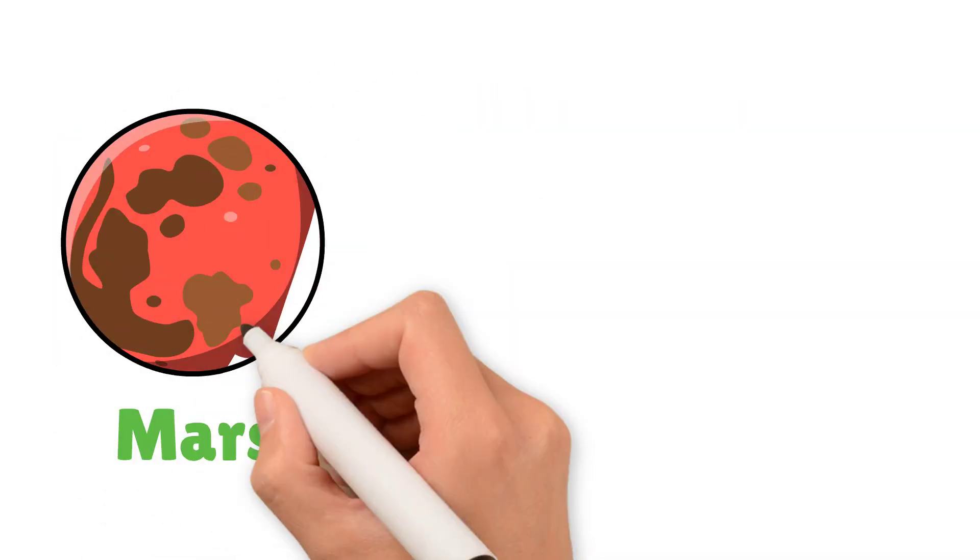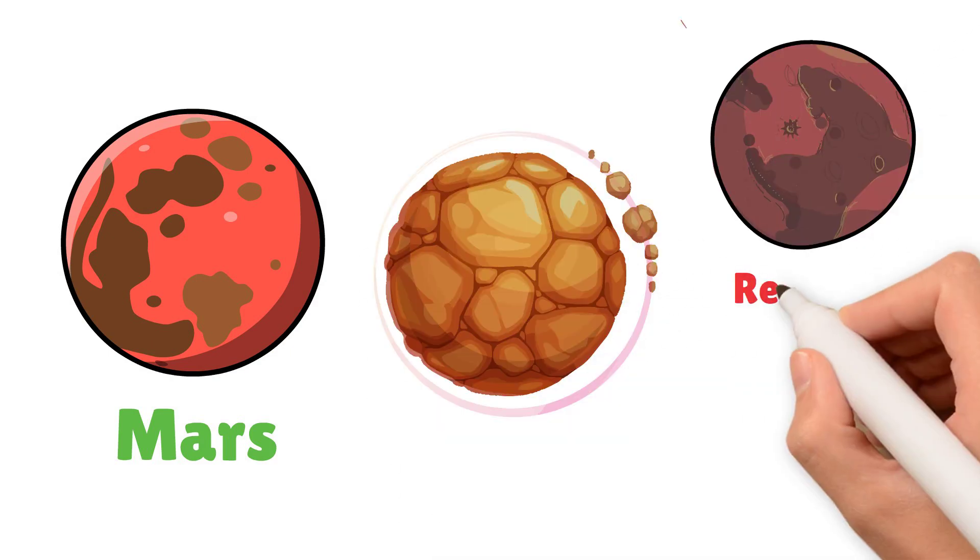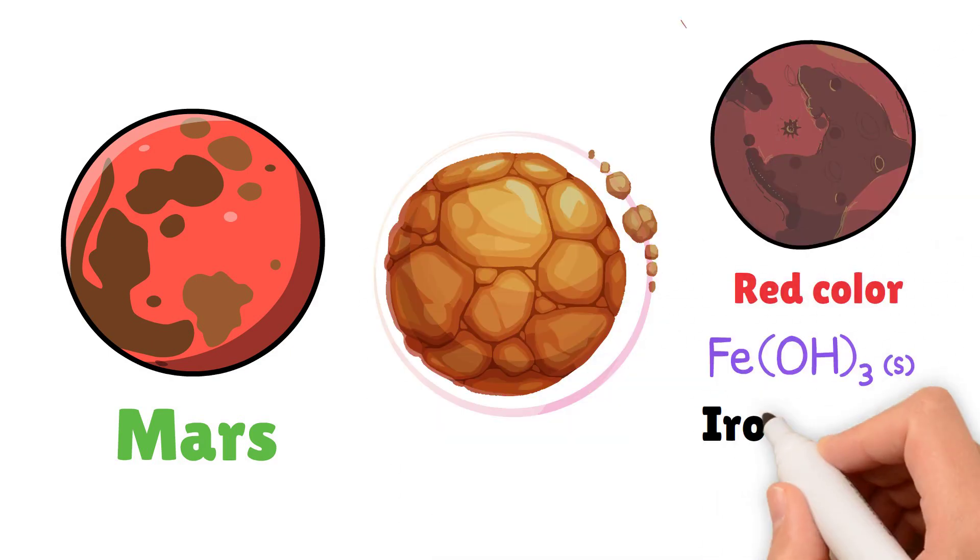After Earth comes Mars, the cold, rocky planet with a thin atmosphere. Mars is known for its red color, which comes from iron oxide or rust.